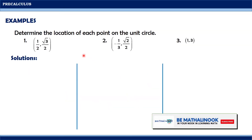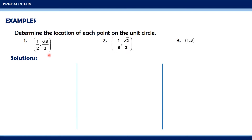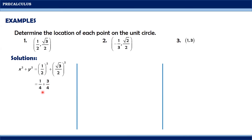Let us determine the location of each point on the unit circle. For the first given, we have (1/2, square root of 3 over 2). So since we have these coordinates, x is equal to 1/2 and y is equal to square root of 3 over 2. By substitution, we will have (1/2) squared plus (square root of 3 over 2) squared. 1/2 squared equals 1/4, while (square root of 3 over 2) squared equals 3/4. Adding 1/4 and 3/4, we get 4/4 or equal to 1. Since x squared plus y squared is equal to 1, the point (1/2, square root of 3 over 2) is on the circle.